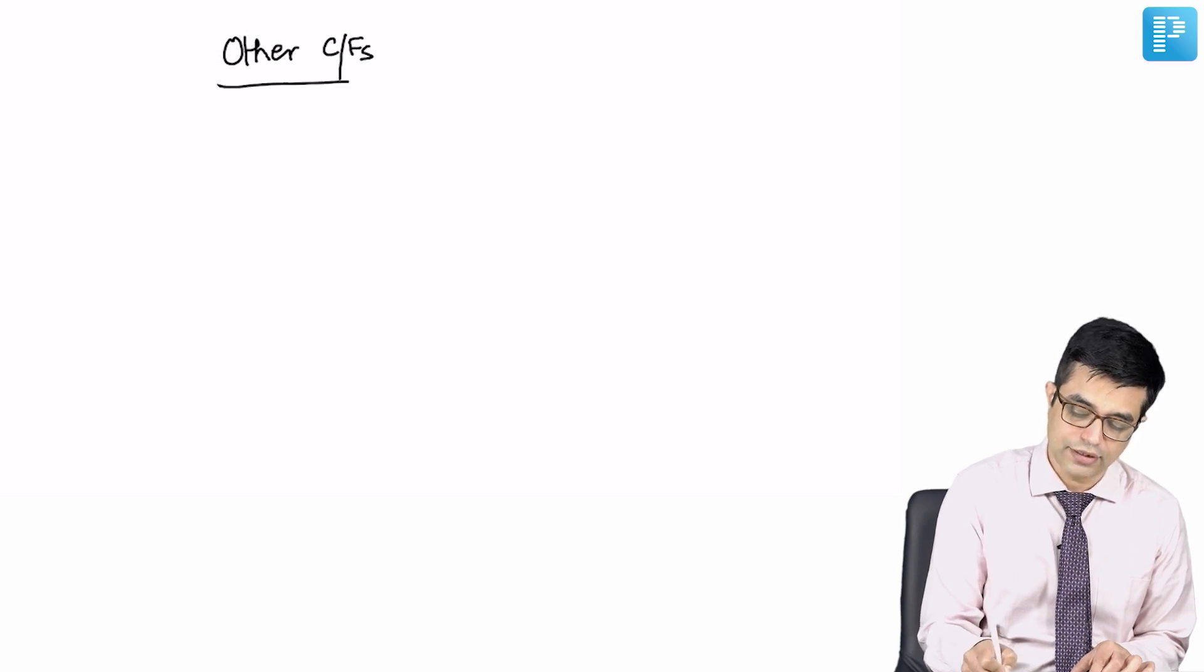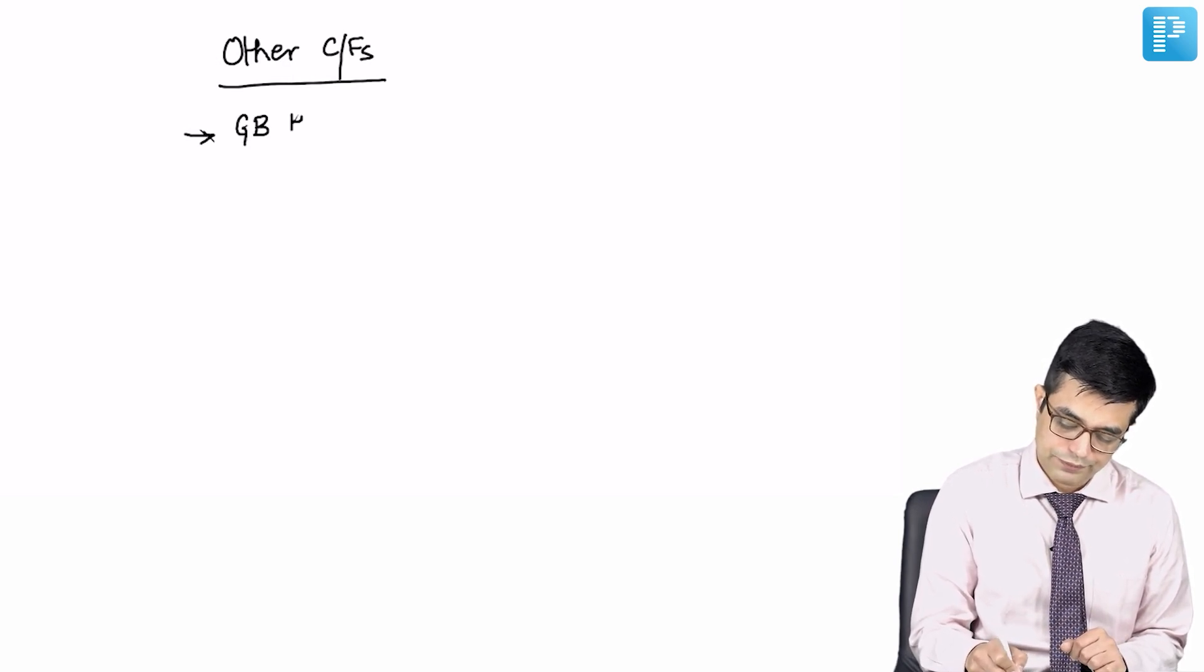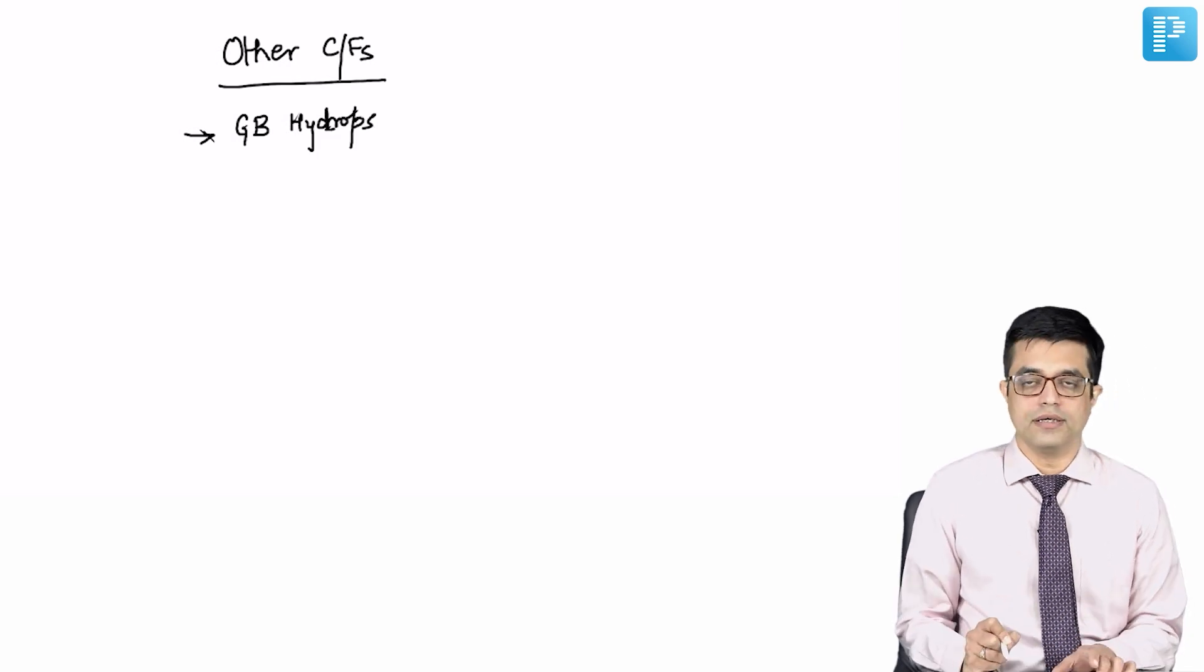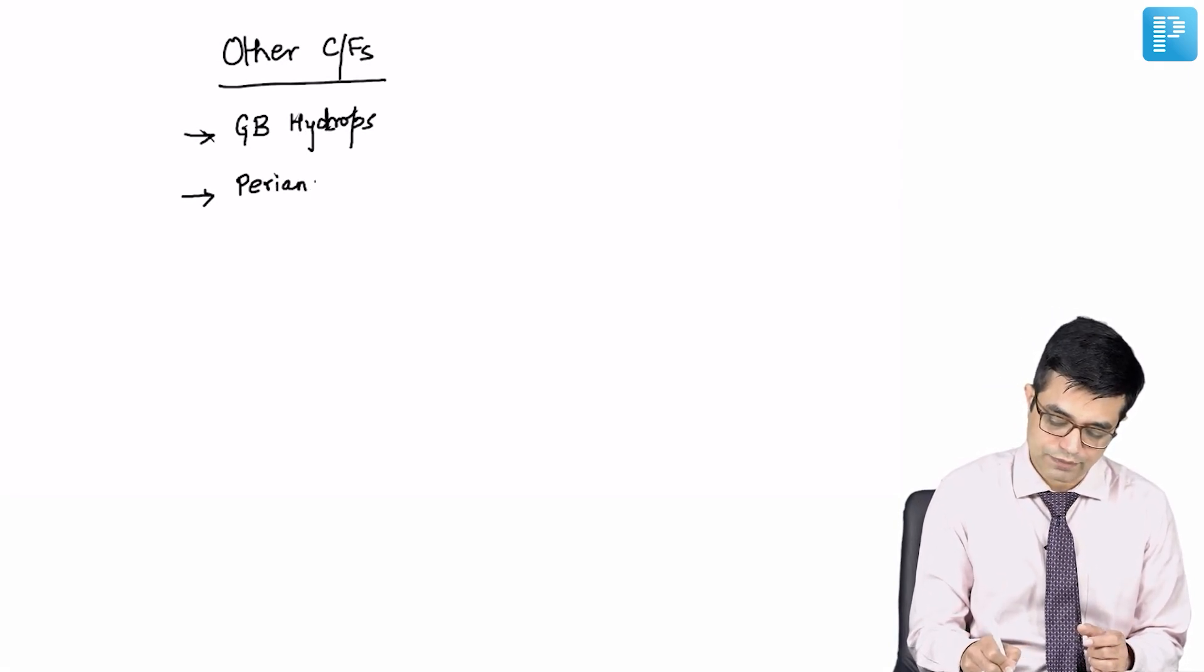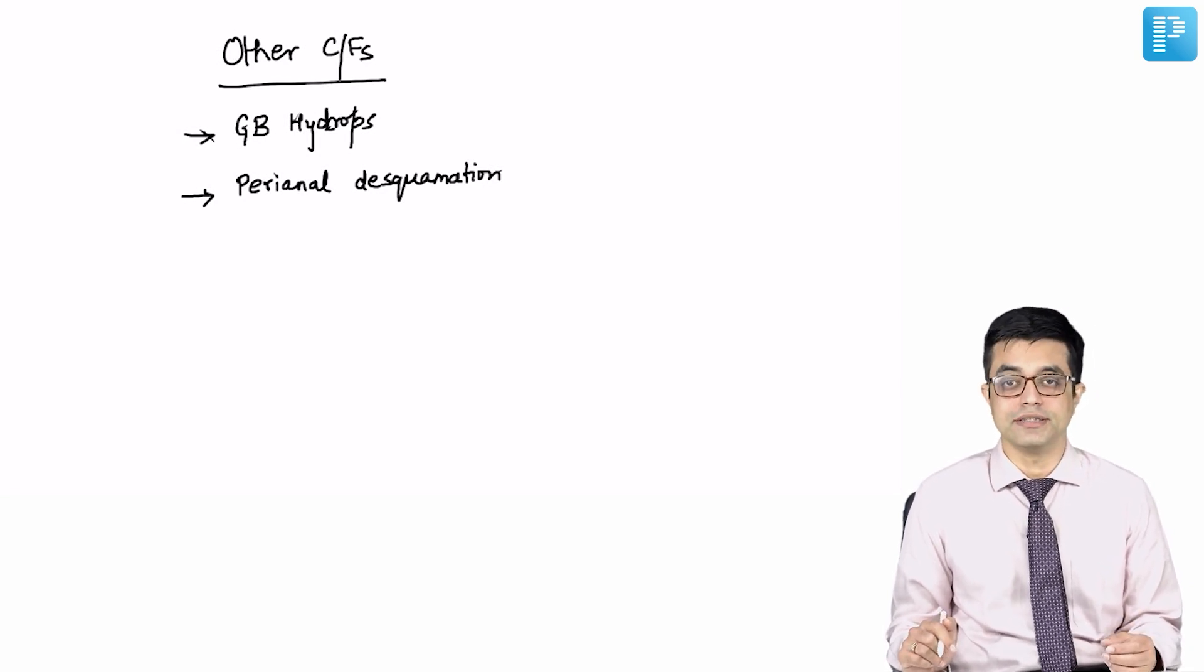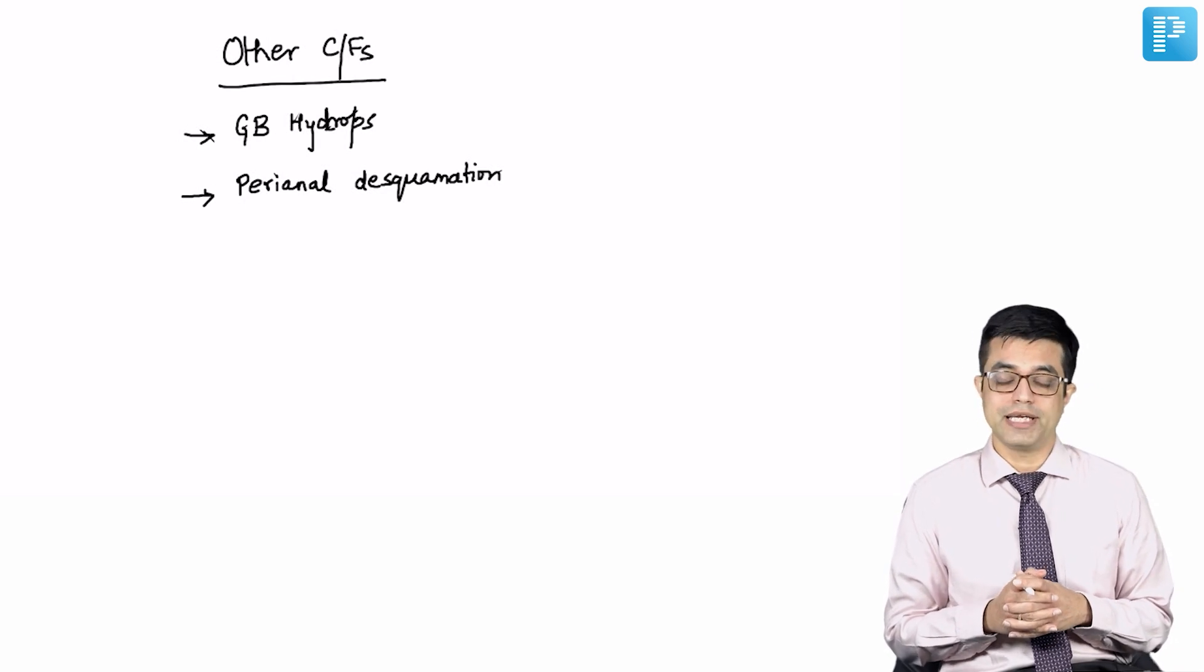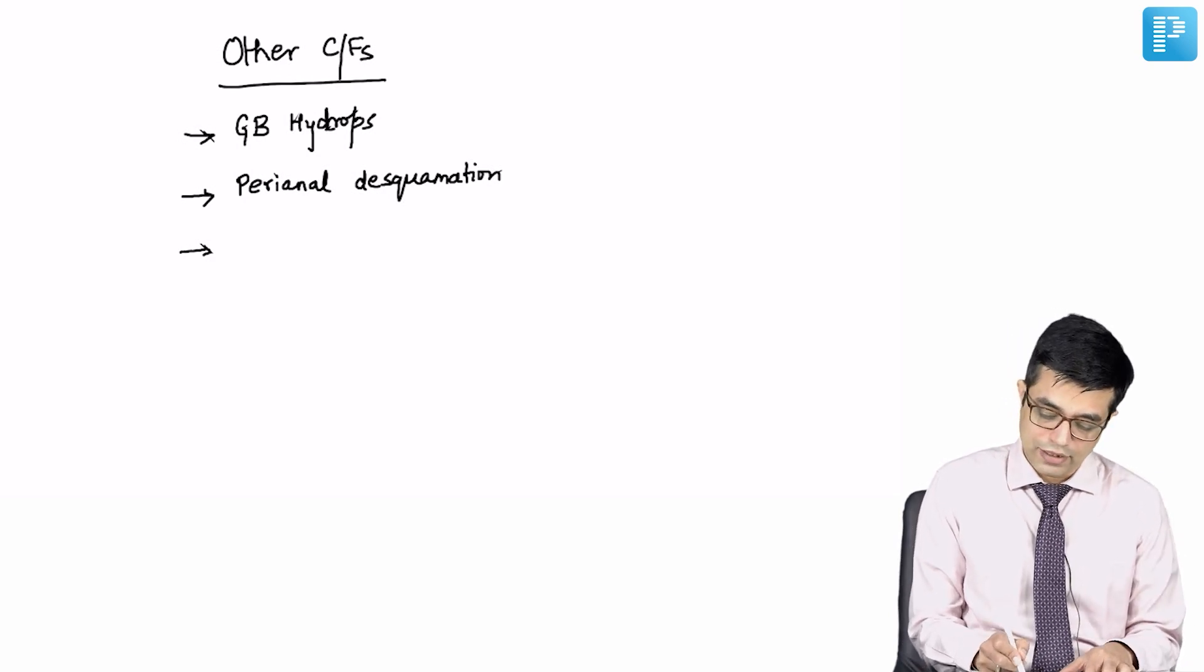Other than these cardinal features, there are other manifestations frequently seen. They include gallbladder hydrops, which may or may not be associated with biliary manifestations. Many children with Kawasaki disease may have perianal desquamation. I still remember in my time, it was asked in VIVA: if desquamation is not present in tips of fingers and toes, where else would you look for desquamation in Kawasaki disease? The answer is perianal region.